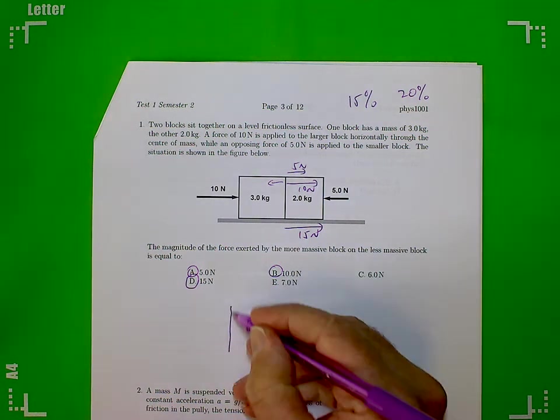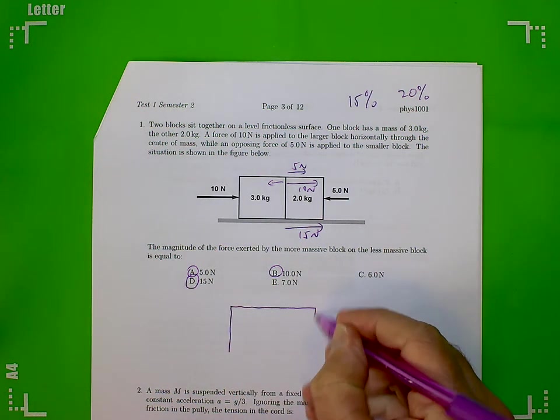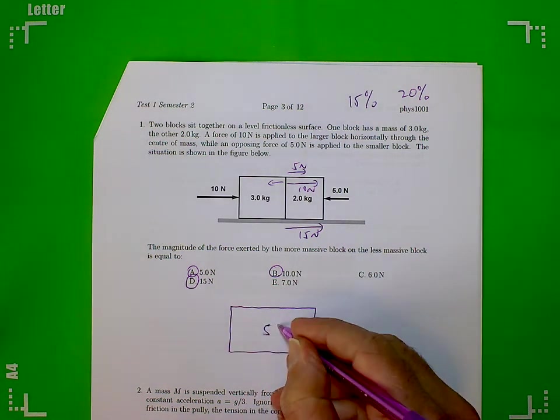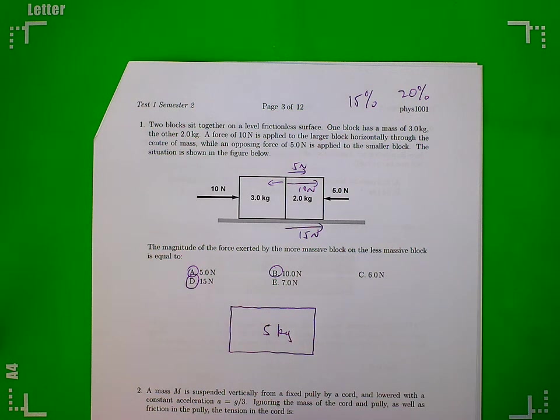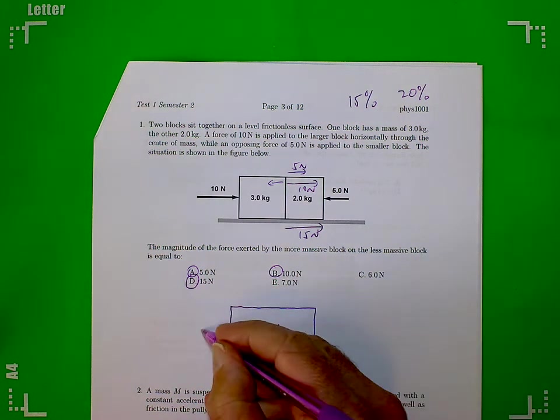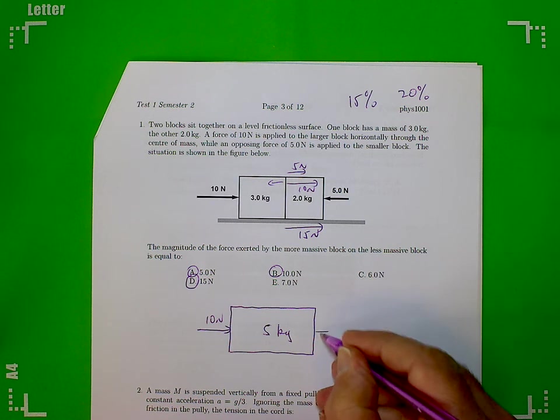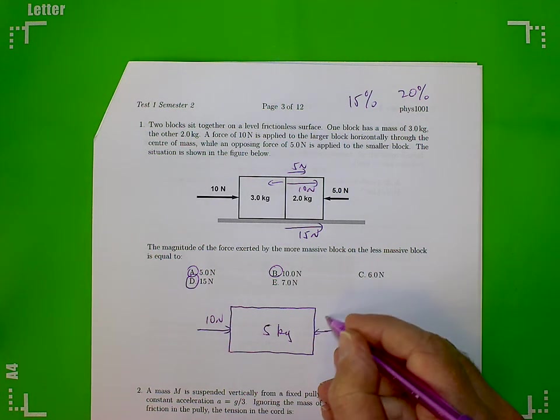Okay, so how do we do this? All right, I'm going to do it properly now. First of all, let's draw. Drawing both blocks together, and between them they have a mass of 5 kilograms. Acting to the right is a force of 10 newtons and to the left is a force of 5 newtons.